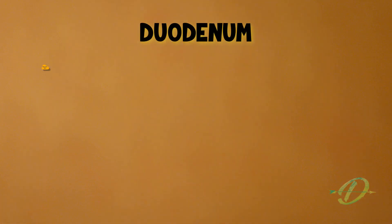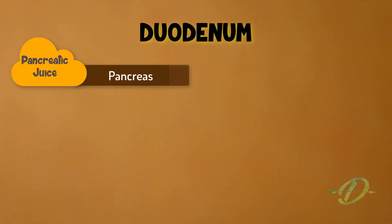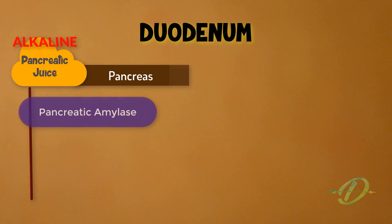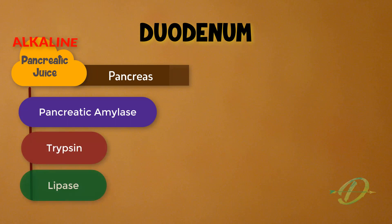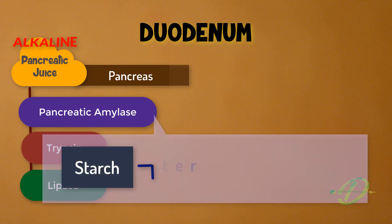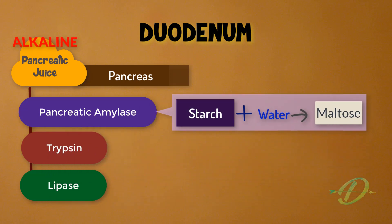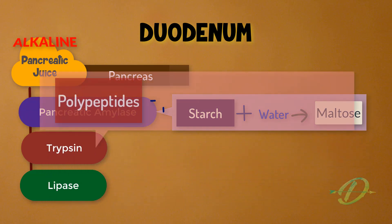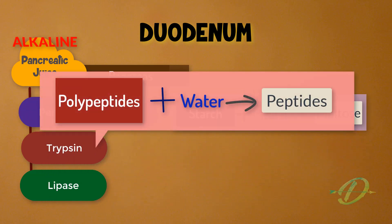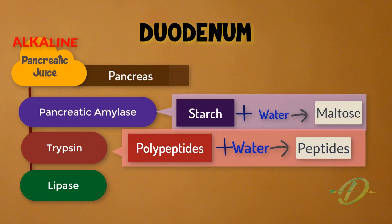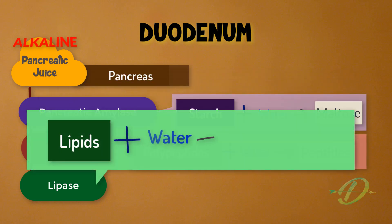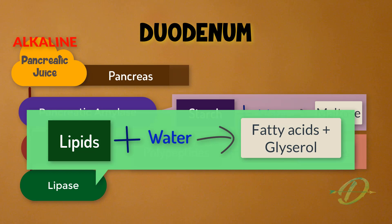Next, pancreatic juice is secreted into the duodenum by the pancreas. Pancreatic juice provides an alkaline condition for the actions of enzymes pancreatic amylase, trypsin, and lipase. Pancreatic amylase hydrolyzes starch to maltose, trypsin hydrolyzes polypeptides into shorter chains of peptides, and lipase breaks down lipids into fatty acids and glycerol.